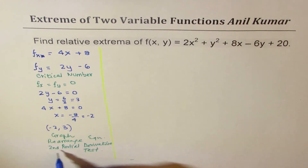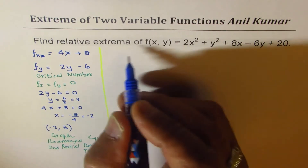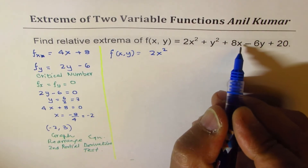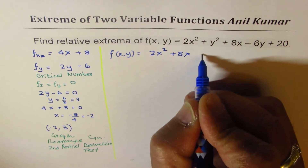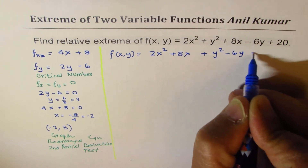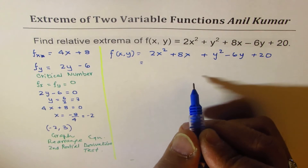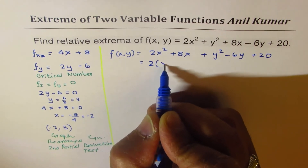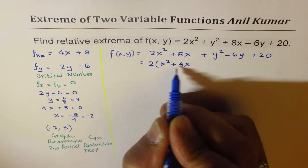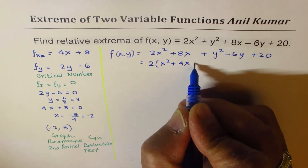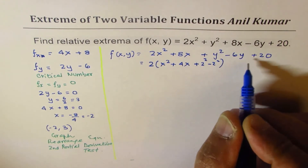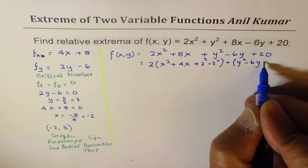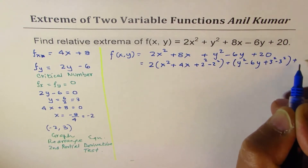Let's rearrange this equation by completing the square. We have f(x,y) = 2x² + 8x + y² - 6y + 20. Group the x-terms: 2(x² + 4x). To make a perfect square, add and subtract 2². For the y-terms: y² - 6y — half of 6 is 3 — so add and subtract 3². Plus 20.